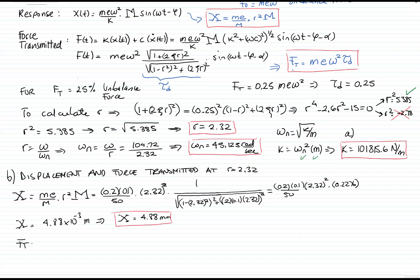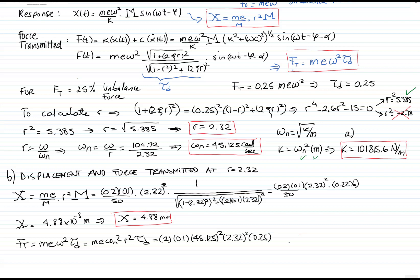The magnitude of the transmitted force equals the unbalanced force times the transmissibility factor. We already know the transmissibility factor is 0.25. Introducing the unbalanced mass of 2 kg, eccentricity of 0.1 m, natural frequency squared, R squared, and transmissibility factor of 0.25, that gives a transmitted force value of 548.3 newtons, which represents 25% of the unbalanced force.